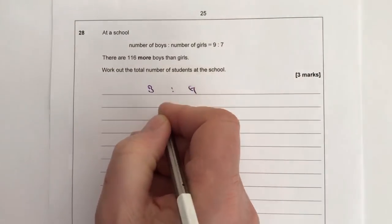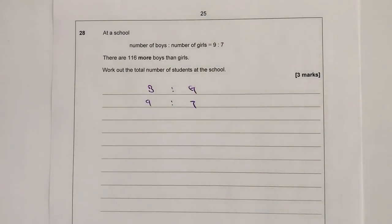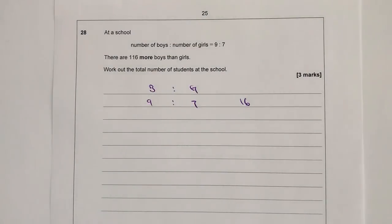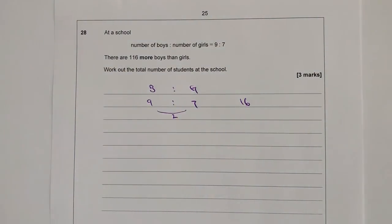So we've got boys and we've got girls, and we've got 9 to 7. So what we're saying really is that if there were 16 children in the school, 9 of them would be boys and 7 of them would be girls. And the difference between boys and girls would be 2; there would be 2 more boys than there would be girls. However, according to the question, there are actually 116 more boys than girls.